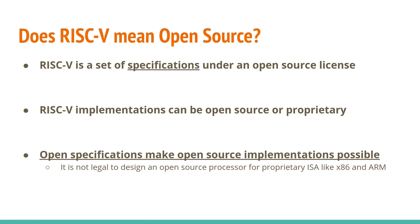Sometimes people ask whether RISC-V is an open source processor or open source CPU, and that's not quite right. RISC-V is just a set of specifications under an open license — the RISC-V implementations can be either open source or proprietary. But open specifications make open source implementations possible. We can't have an open source processor for a proprietary ISA like x86 or ARM. So RISC-V being open makes it possible for us to have open source processors.